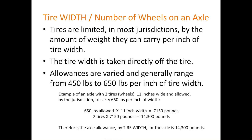Tire width and number of wheels on an axle. Tires are limited in most jurisdictions by the amount of weight they can carry per inch of tire width, taken directly off the tire. Allowances generally range from 450 to 650 pounds per inch of tire width. For example, with two tires that are 11 inches wide and allowed to carry 650 pounds per inch: 650 times 11 equals 7,150 pounds. Then two tires times 7,150 equals 14,300 pounds — the axle allowance by tire width.